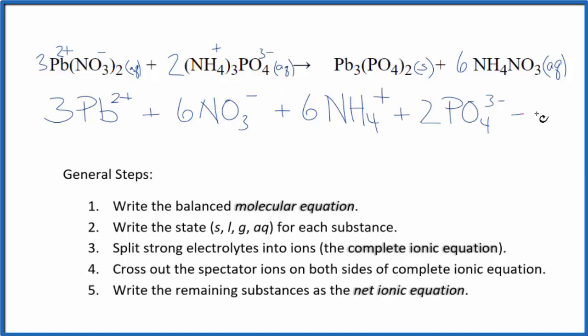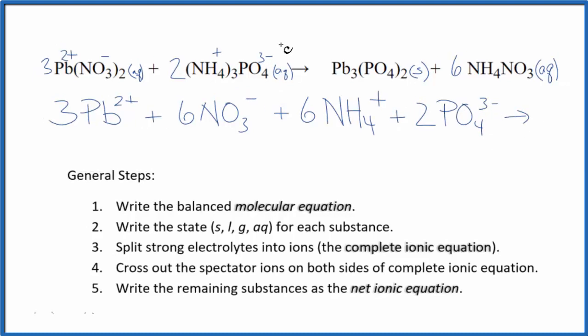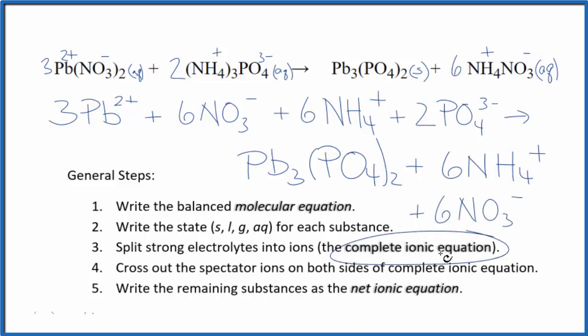And these are the reactants in our net ionic equation. In the products, we have our lead 2 phosphate here. But we don't split solids apart in net ionic equation. So, we're going to keep this lead phosphate together. Lead 2 phosphate. And then, for our ammonium nitrate, we'll have 6 ammonium ions, plus that 6 goes to everything. So, 6 nitrate ions. So, this is the complete ionic equation, sometimes called the total ionic equation.